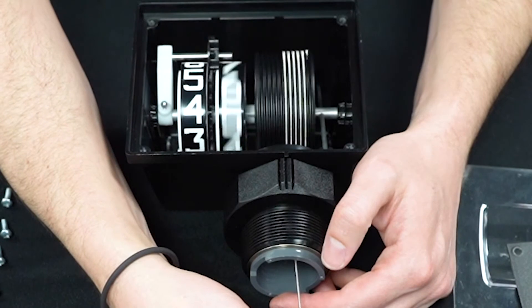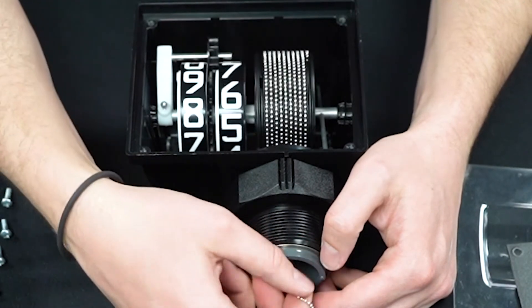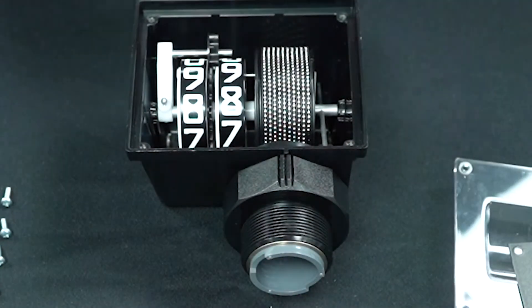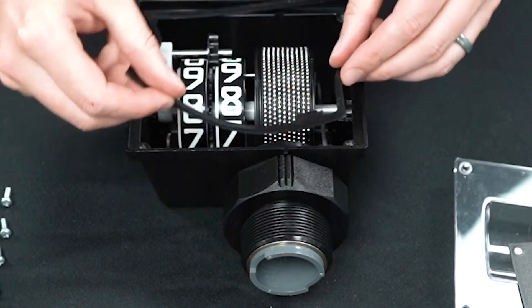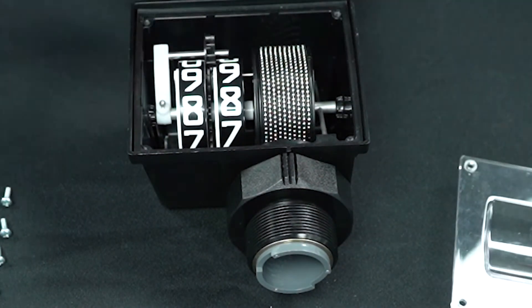After you let the chain slowly retract back up into the gauge, you can replace the gasket, the face plate, and the cover plate and secure them with the four screws.